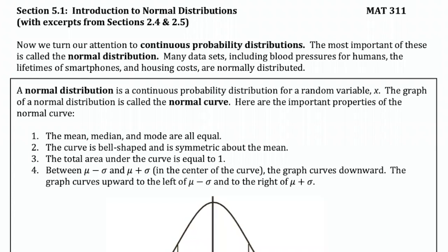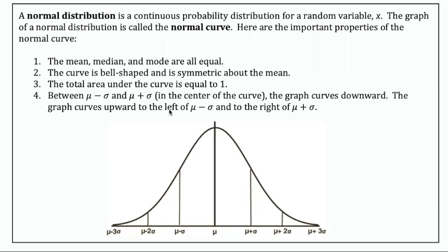In section 5.1, we're now going to begin looking at continuous rather than discrete probability distributions. The most important of these is called the normal distribution. Many data sets, including blood pressures for humans, the lifetimes of smartphones, and housing costs are normally distributed. What that means in the most general terms is that it's going to have this kind of shape when graphed.